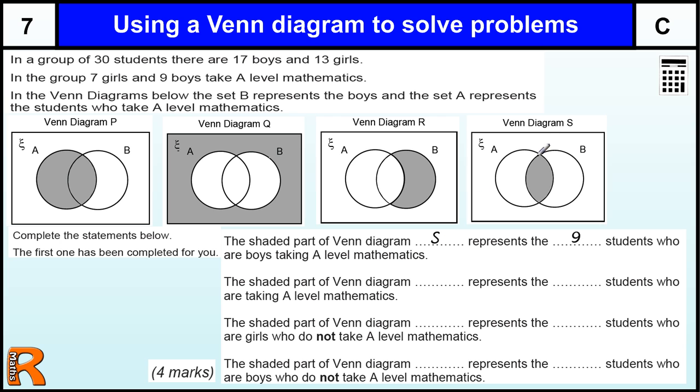We're given an example: S is the nine students that are boys and taking A level maths because they are both in the boys group and the A level maths group, so they're boys taking A level maths.